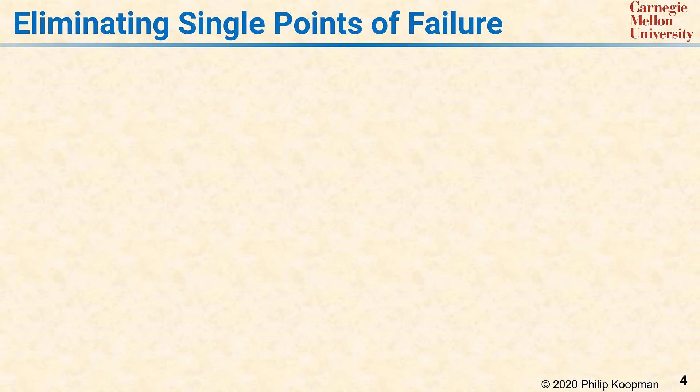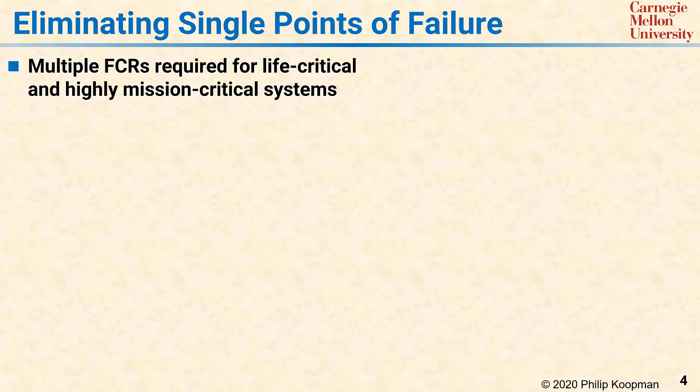Eliminating single points of failure requires the use of redundancy. If your system must be more reliable than the reliability limit imposed by individual component failure rates, then redundancy is the only way to meet your system reliability goals. Typically, redundancy must be used if you wish to do better than about one critical system failure every 100,000 hours, depending on your system design.